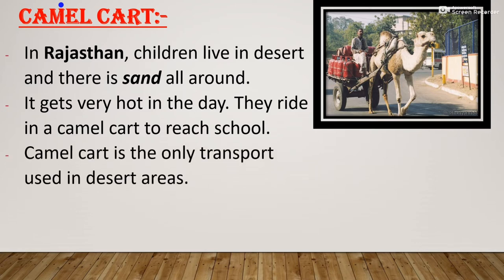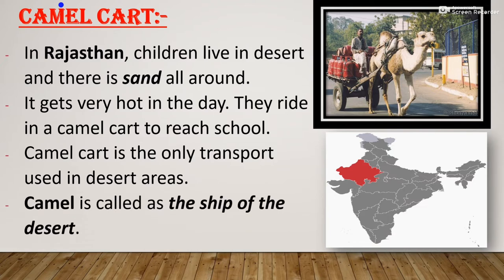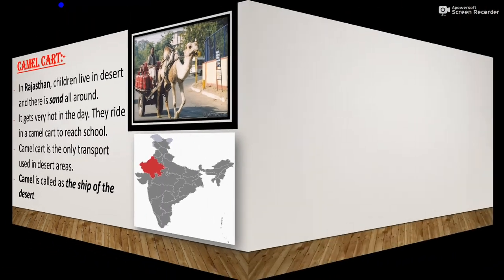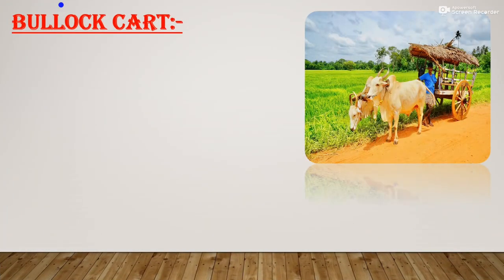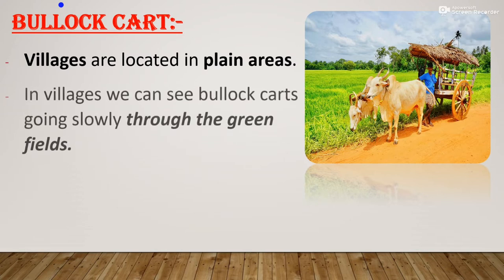In Rajasthan, children live in the desert and there is sand all around, so it gets very hot in the day. They ride a camel cart to reach school. The camel cart is the only transport used in desert areas because camels are the only animals who can easily walk across the sand. Camel is called the 'ship of the desert' because camels can easily work on the desert terrain.